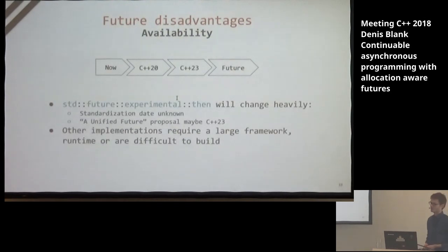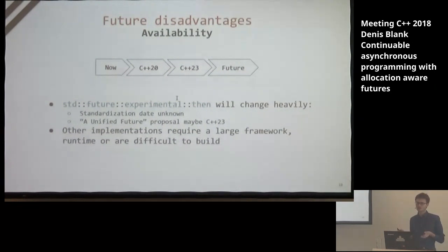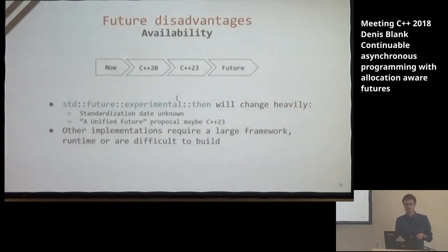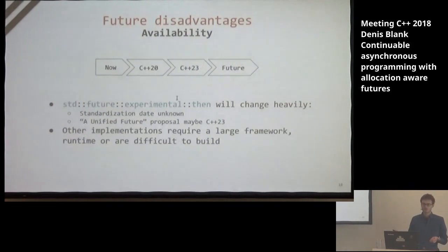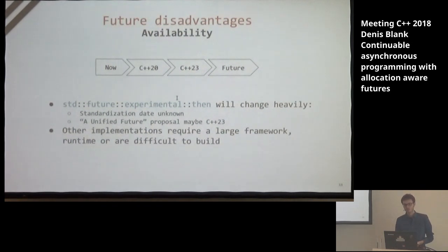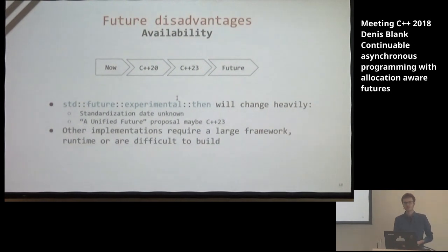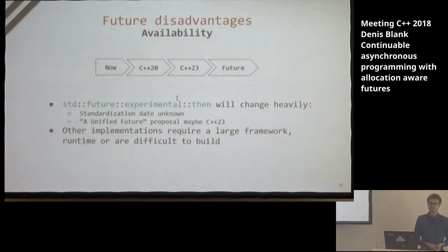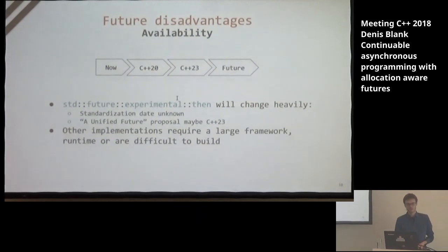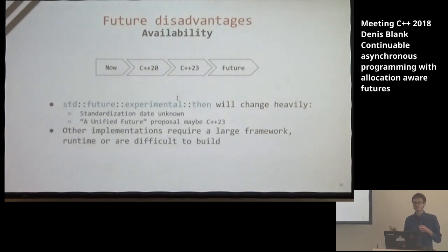Other future implementations like Boost Future, Folly, or HPX usually require a larger framework or runtime, or are really difficult to build — so they're not something you can embed easily into your application. Now, thinking about how we could possibly improve futures, the design goals could be: it should be usable in a broad range of scenarios — some use Boost, some use Qt, some use in-house frameworks — so the library should ideally work with all of them. It should be portable, platform-independent, and simple to use, agnostic to user-provided executors and runtimes.